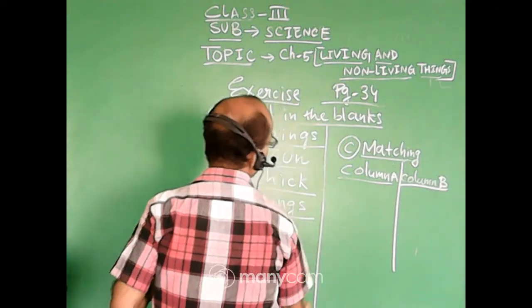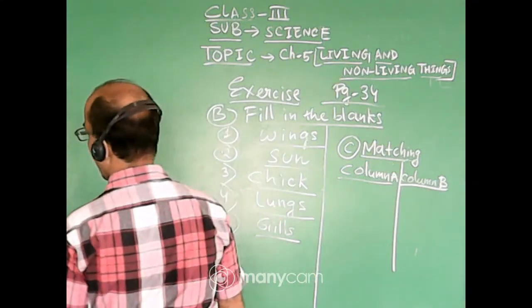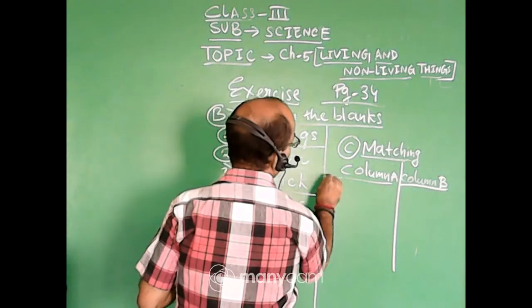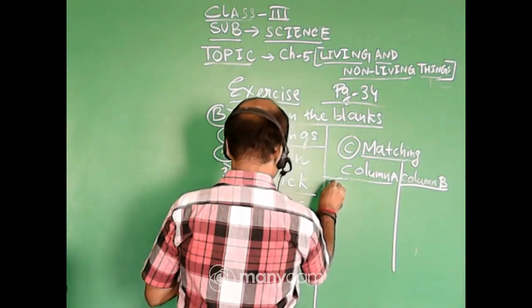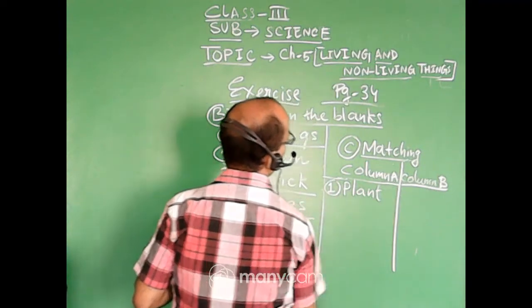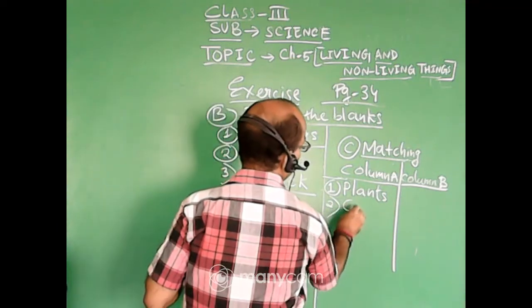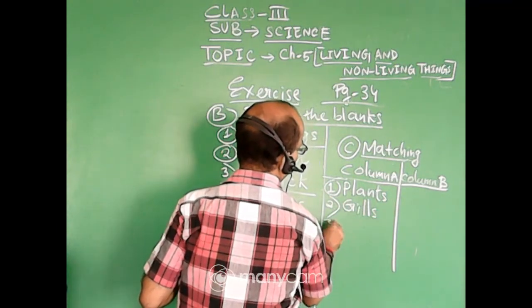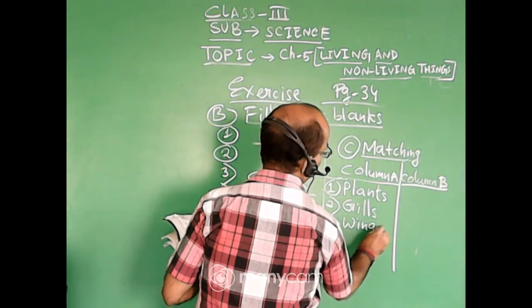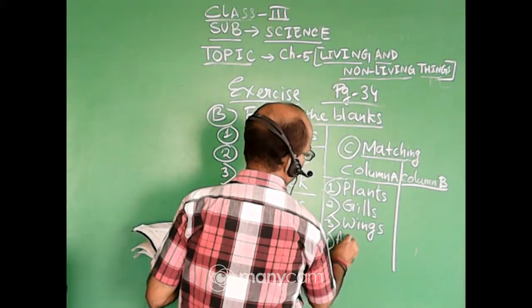I will just draw a line here so that it will be good for you so that you can see the board properly. See here. Number 1. Plants. Number 2. Gills. Number 3. Wings. Number 4. Antennae or antenna.